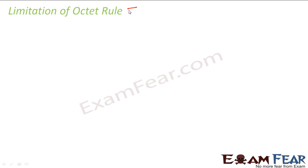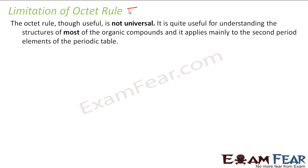We have till now seen that the octet rule was the basic foundation for the Lewis structure. But there are some limitations for the octet rule. As I told, this is not a universal rule — for example PCl5 or SF6, there are scenarios where the octet rule is not true. It is true for most organic compounds, but not for all.